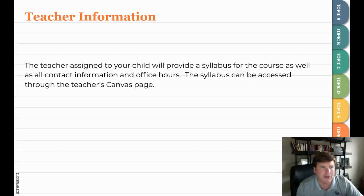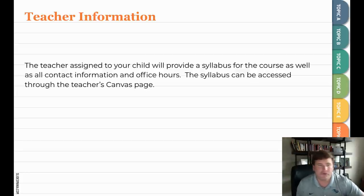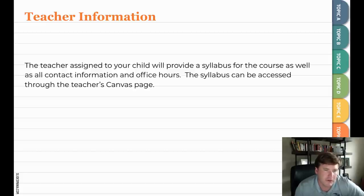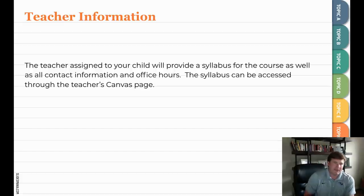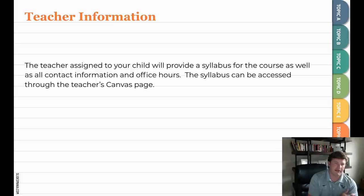Teacher information: your kids will have four different teachers based on their virtual class schedule. The teacher assigned to you will provide a syllabus for the course as well as all contact information and office hours. The syllabus will be accessible through the teacher's Canvas page. Because every kid has four different teachers, the details are specific to each syllabus found on Canvas.